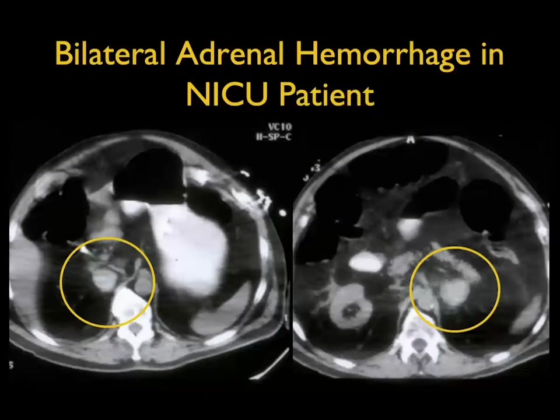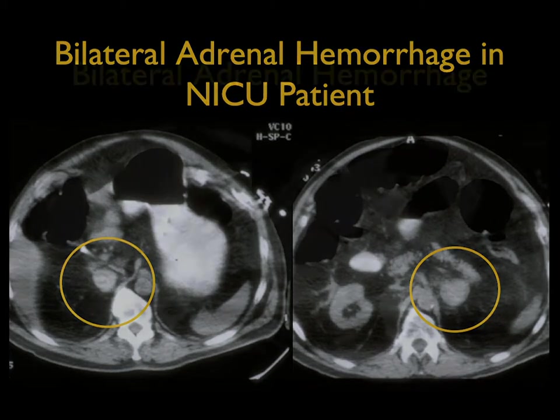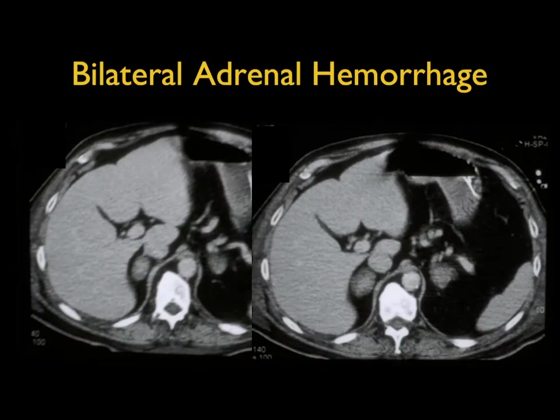This case: an ICU patient post-brain surgery, with unclear presentation initially thought to be sepsis. On non-contrast imaging, there's a round, high-attenuation lesion — that's adrenal hemorrhage. When evaluated, the patient was Addisonian. And in another case, bilateral high-density adrenal hemorrhage — no ifs, ands, or buts.